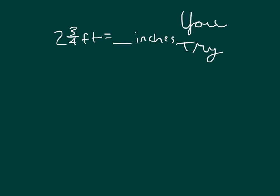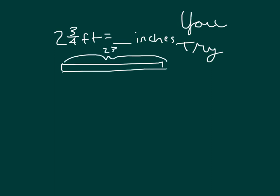Here's another one for you to try. We have two and three-fourths feet equaling how many inches. We're going from a bigger to a smaller unit, so we need more of those smaller units — we need more inches to describe two and three-fourths feet. Sometimes it helps to draw that tape diagram. So if this is the whole thing, two and three-fourths feet, we have one foot, two feet, and then this one here is three-fourths of a foot. And where each of these is one foot, which is also twelve inches.